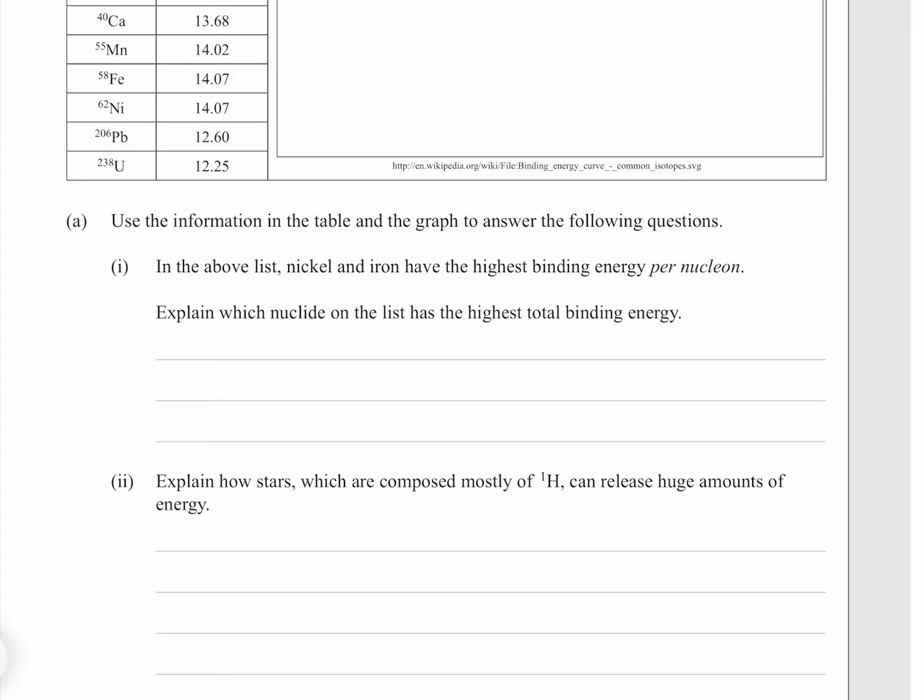In the list above, nickel and iron have the highest binding energy per nucleon. Explain which nuclide on the list has the highest total binding energy.